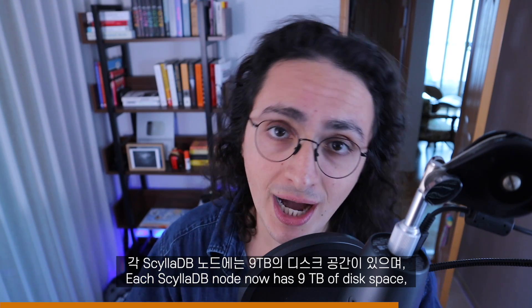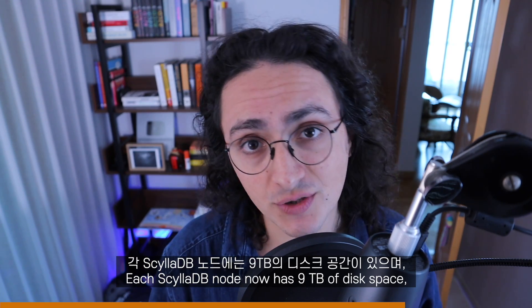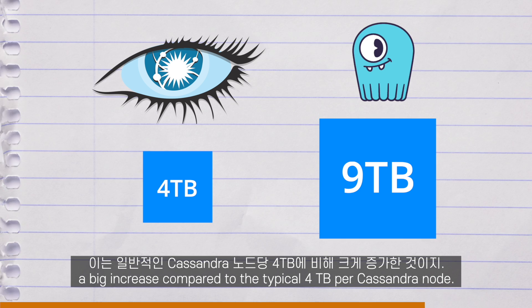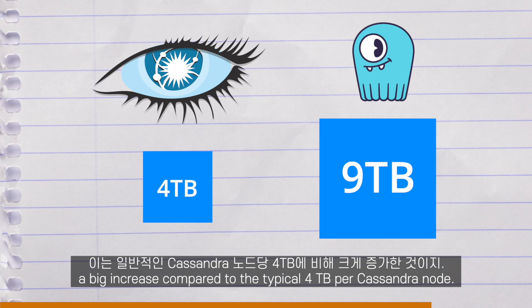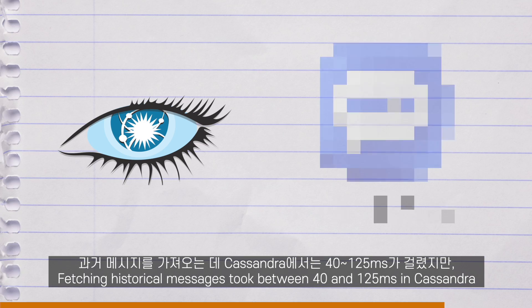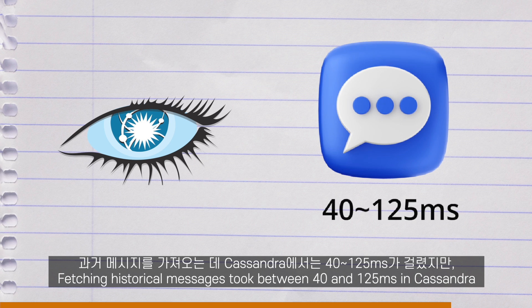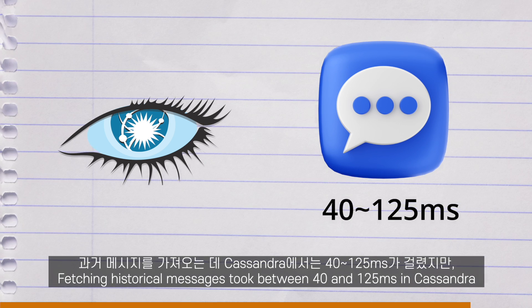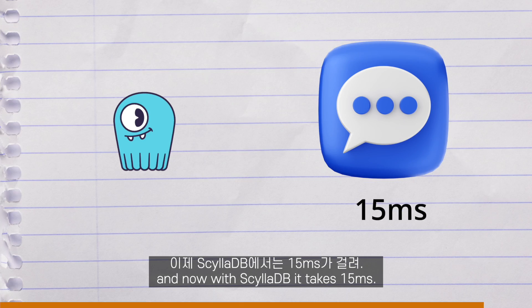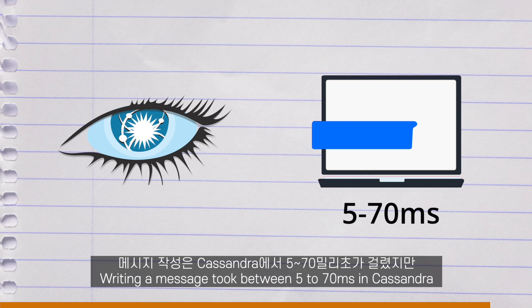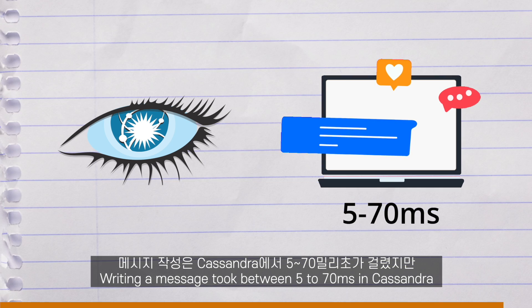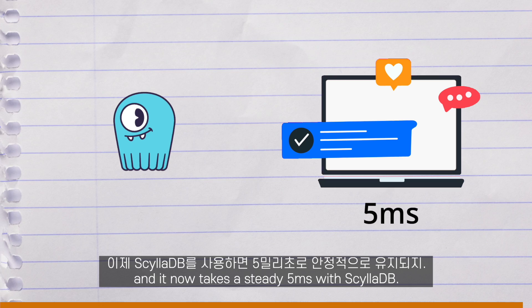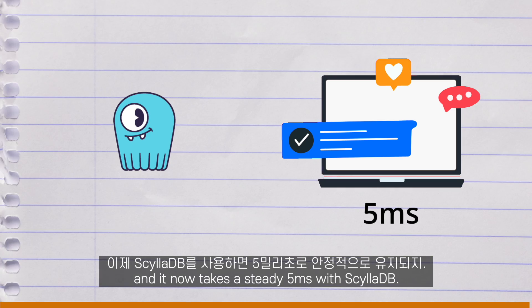Each ScyllaDB node now has 9 terabytes of disk space, a big increase compared to the typical 4 terabytes per Cassandra node. Fetching historical messages took between 40 and 125 milliseconds in Cassandra, and now with ScyllaDB it takes 15 milliseconds. Writing a message took between 5 and 70 milliseconds in Cassandra, and it now takes a steady 5 milliseconds with ScyllaDB.